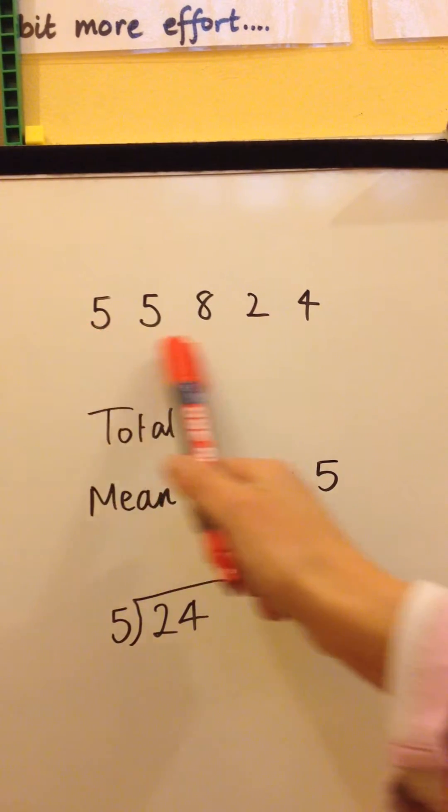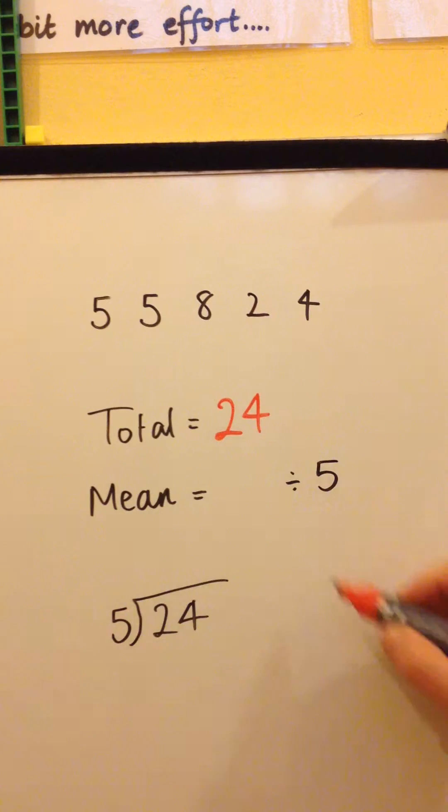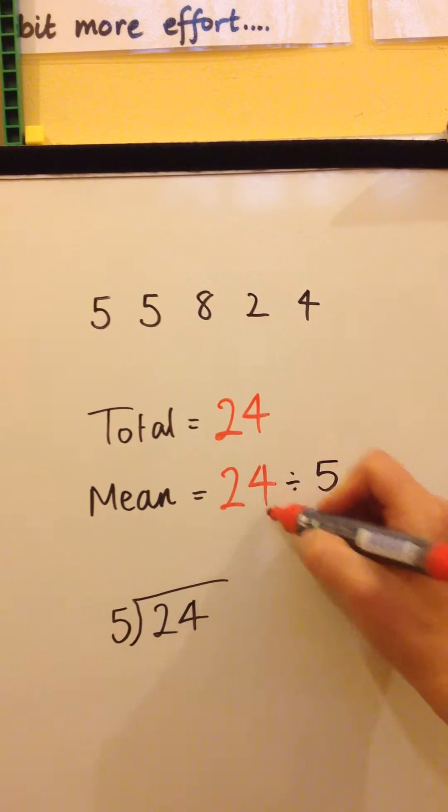The total of all of these five values is 24. So to work out the mean, you need 24 divided by 5.